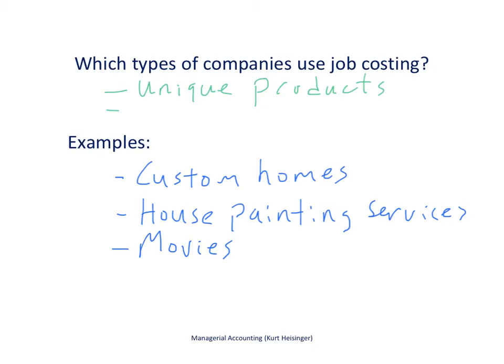So which types of companies tend to use a job costing system and what types of products do they produce? First, they tend to be unique products that are not produced in bulk — we'll call that a low volume product. Secondly, they tend to be fairly high cost relative to other types of products that high volume companies will produce.